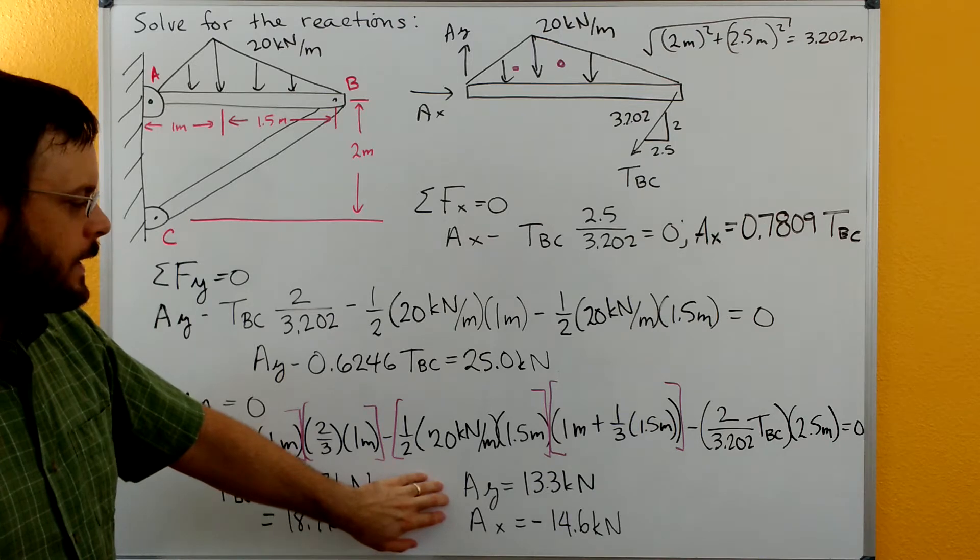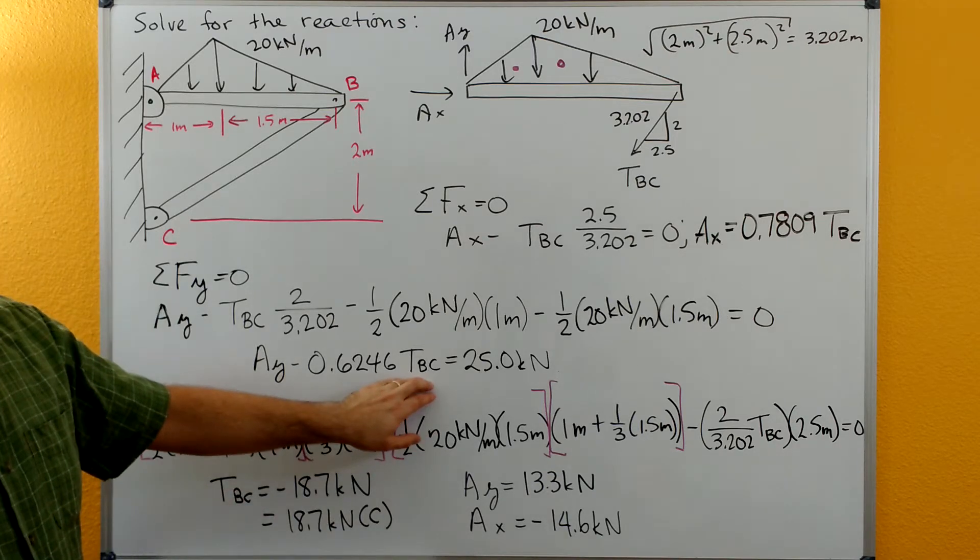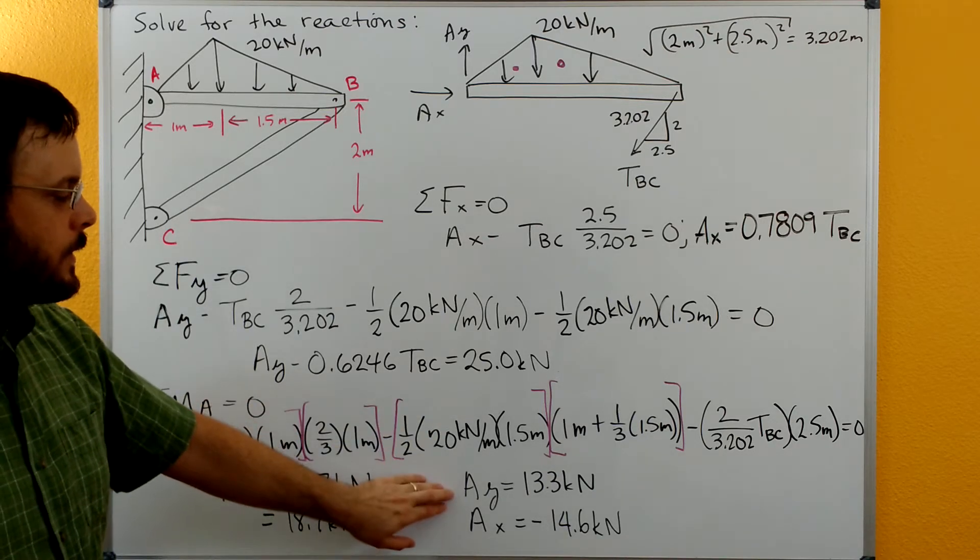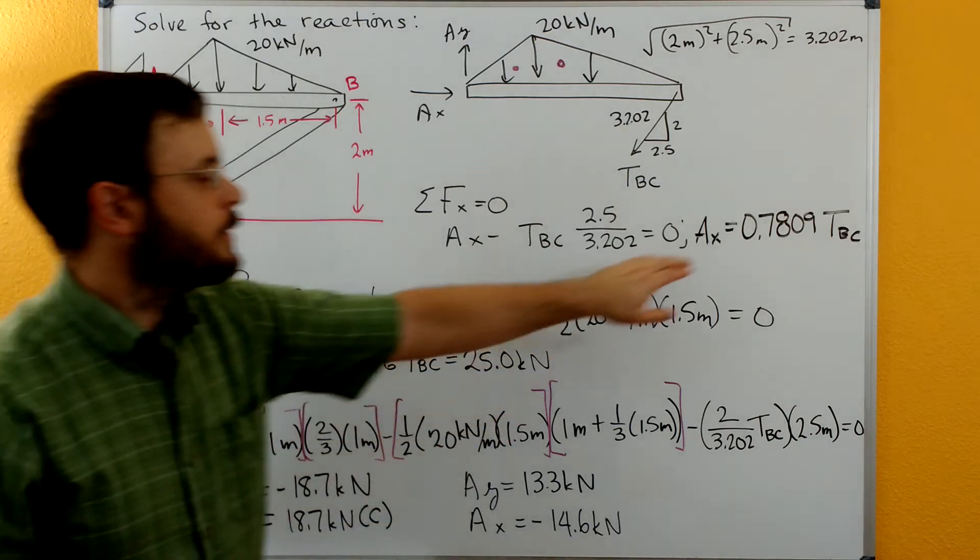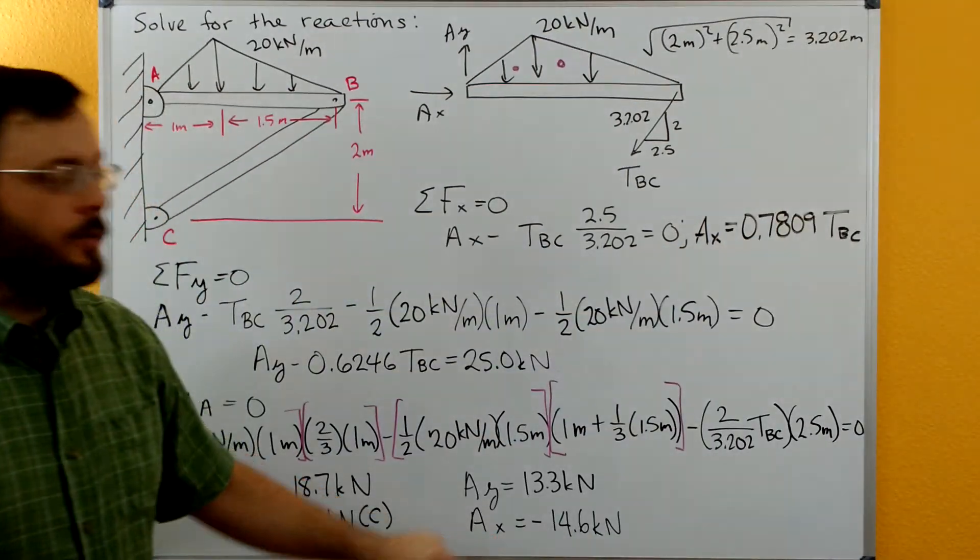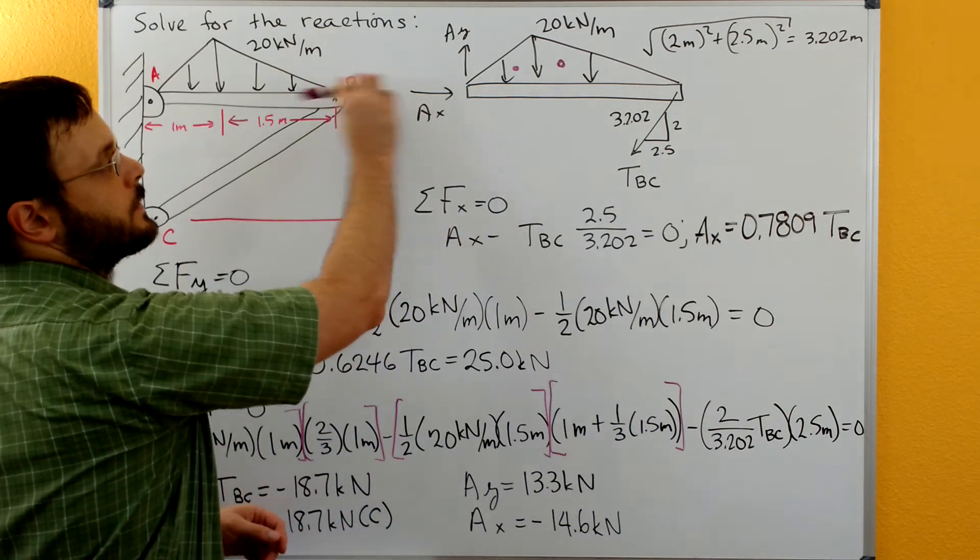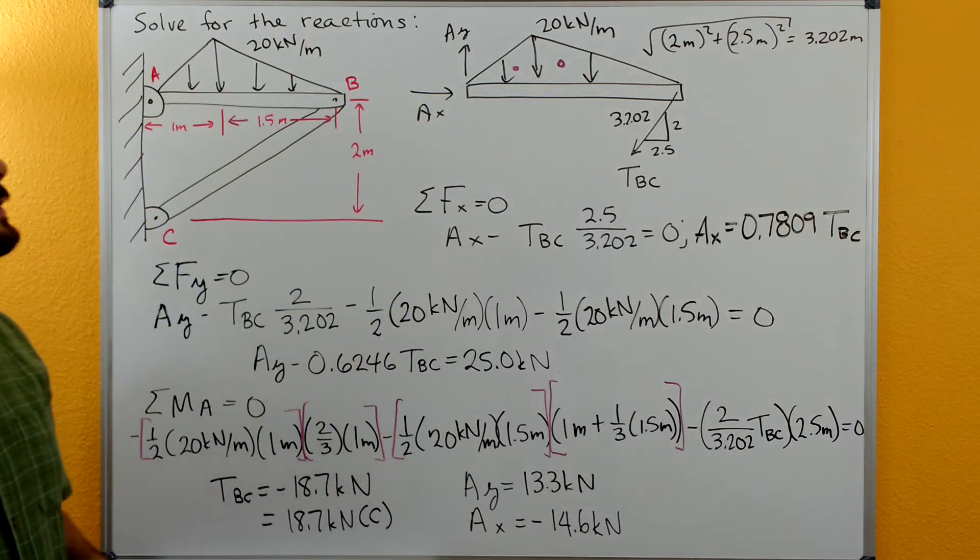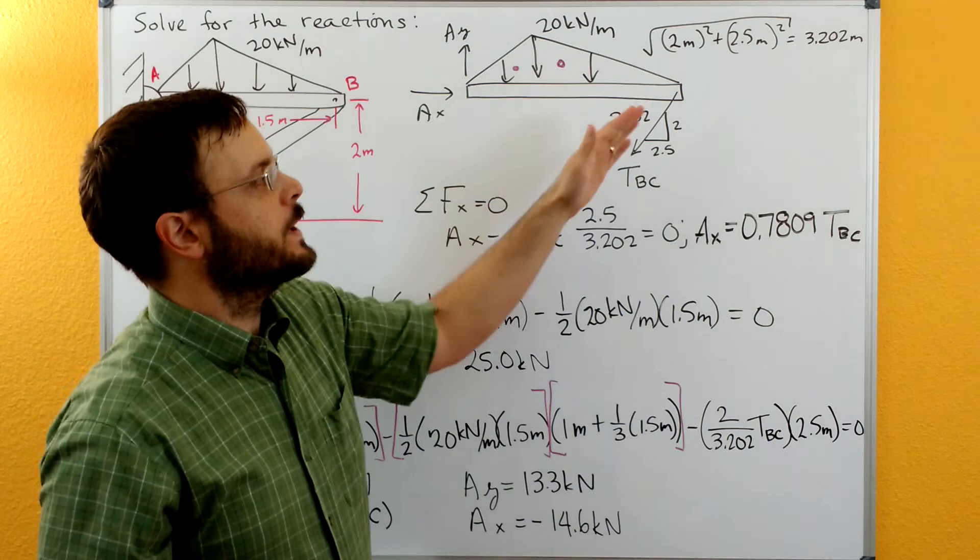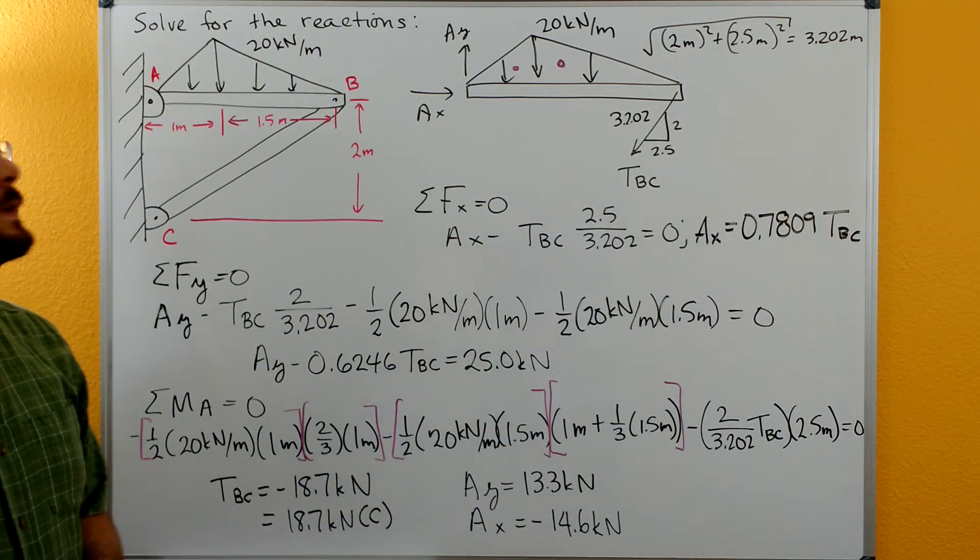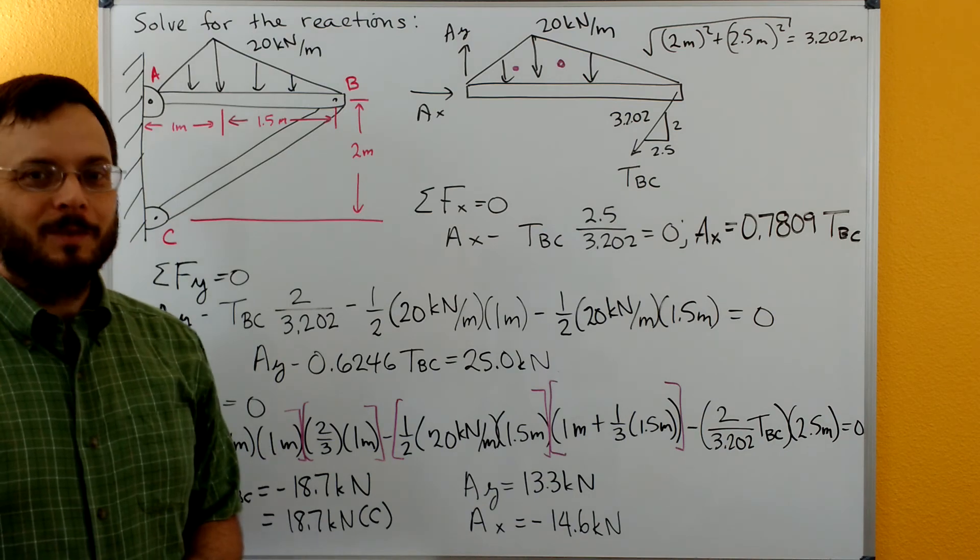And then for AY we plug our value for TBC in here. We get our value for AY. Plug our value for TBC in here and we get our AX. We get an AX that's negative. And so that means our AX is directed over in this direction to counteract the compressive force that TBC exerts on point B.